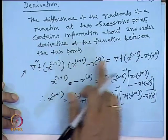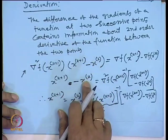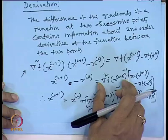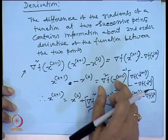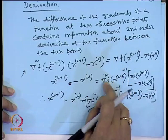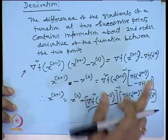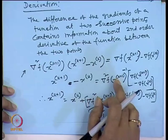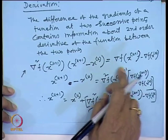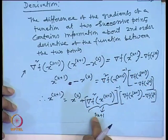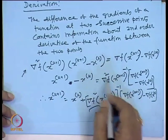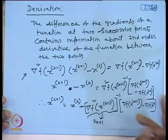Rearranging, we get x^{k+1} − x^k equals the Hessian matrix inversion. In Newton's method for unconstrained optimization, this creates problems: first, the Hessian matrix must be positive definite; second, when the number of variables is very large, the computational burden of inversion is high. So instead, we replace the Hessian inverse with a matrix S_{k+1}, and discuss how S_k is updated at each iteration.